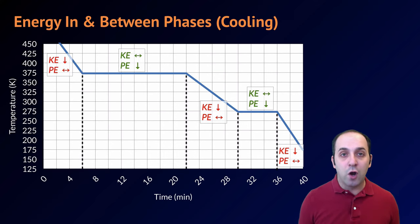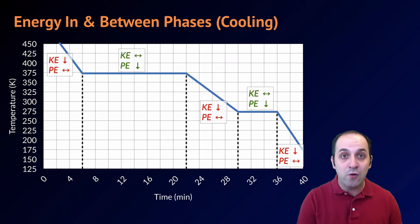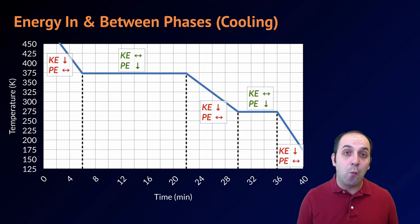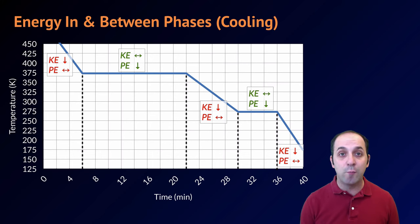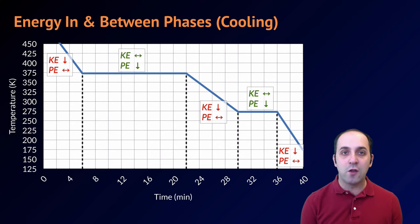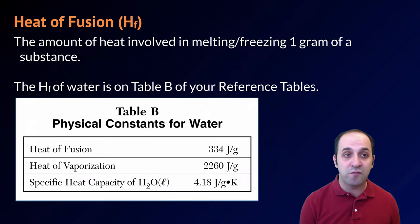On a cooling curve it looks very similar, but the temperature will be going down within a particular phase, causing kinetic energy to decrease. During a phase change we'll be removing energy from the arrangement of particles, decreasing the potential energy. Now that we have an understanding of that, let's take a look at the actual math involved in these two phase changes.